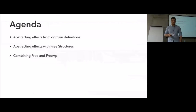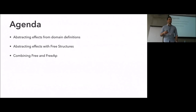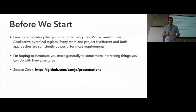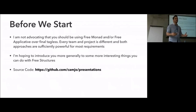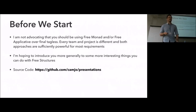What are we going to cover today? We're going to look at how we can abstract effects from our domain definitions, then look at abstracting these effects with free structures, and then look at combining the free monad and free applicative. I know there are strong opinions on these things — I'm not telling you that you should use free monad, free applicative, or final tagless. This is more: if you choose to use these things, here are some cool things you can do with them. The source code is up on my GitHub.